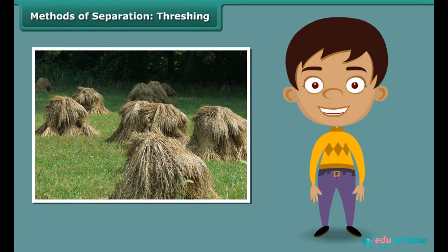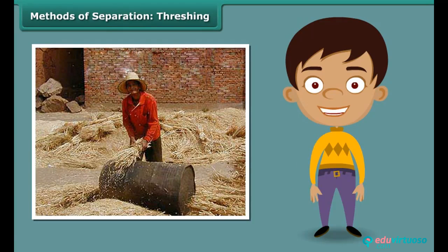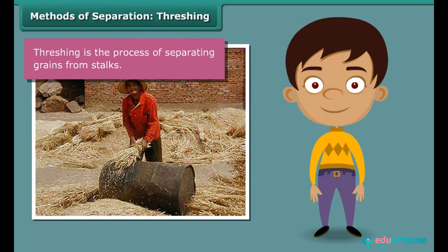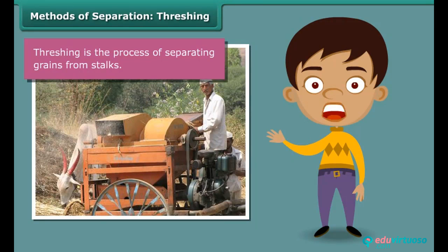You must have seen bundles of wheat or paddy stalks lying in fields after harvest. Have you pondered how a farmer separates the grains from these stalks? Once the wheat or paddy crop is harvested, the farmer ties the stalks together to form bundles and leaves them to dry in the sun. Once completely dried, the farmer beats them against a hard floor to free the grains. This process of separating grains from stalks is known as threshing. Bullocks, oxen and machines known as threshers are also used for this purpose.